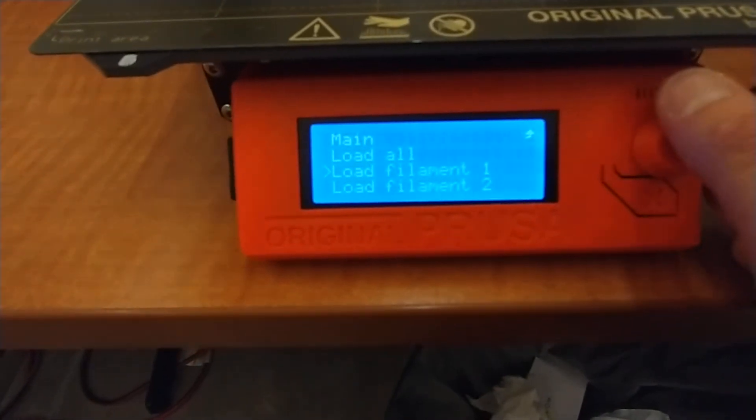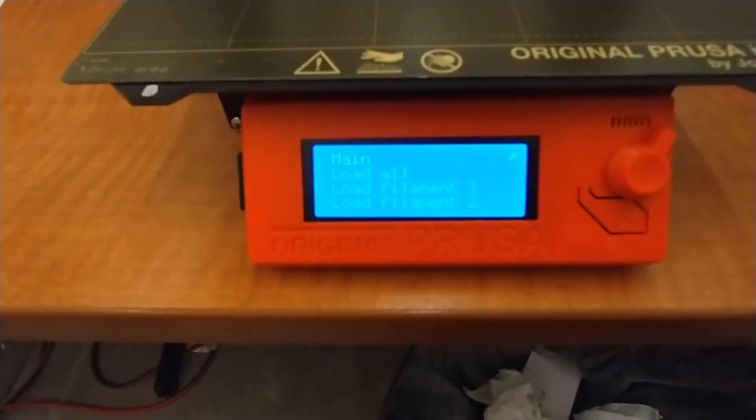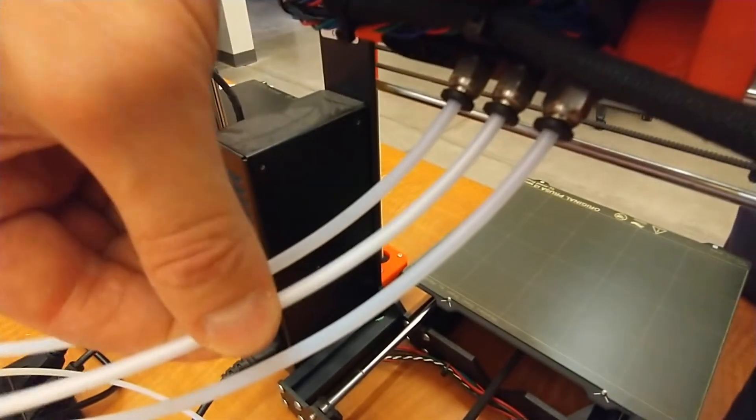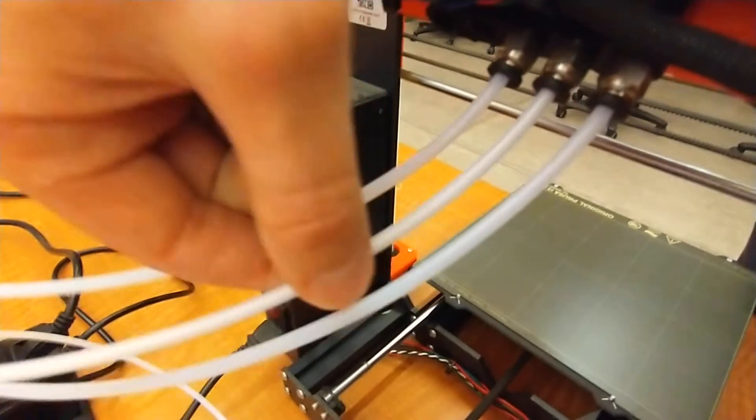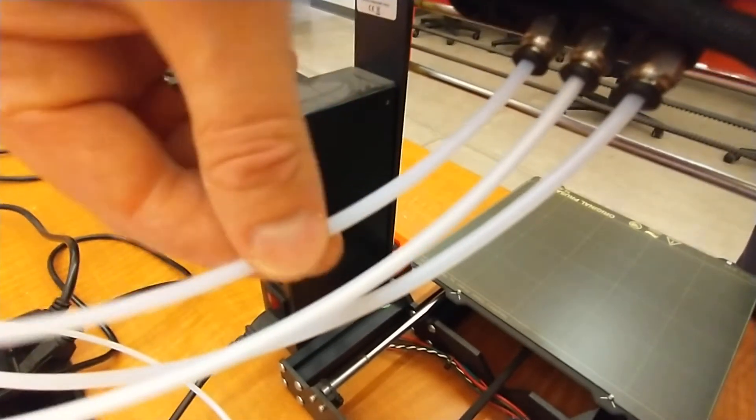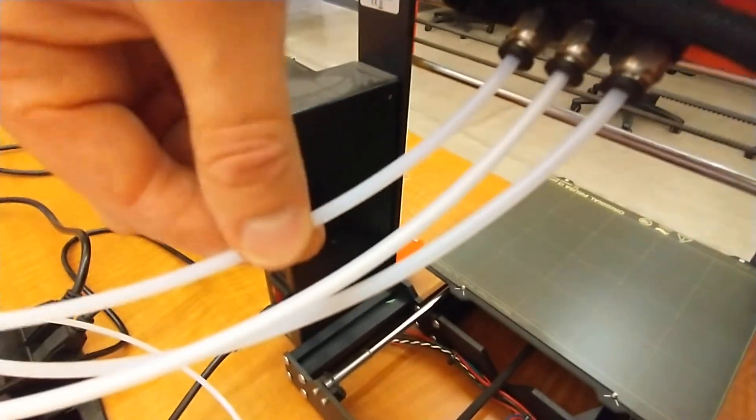I know I'm in filament number two because the tube I loaded into is actually in the second spot. So that would be one, two, three. I only have it set up for three materials at the moment.